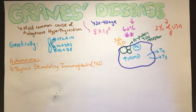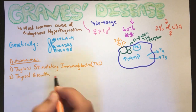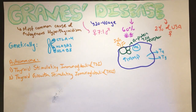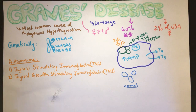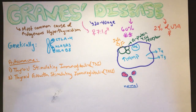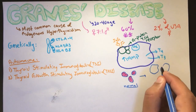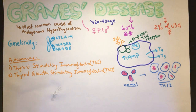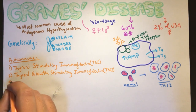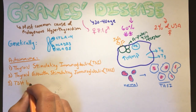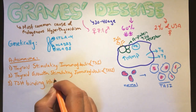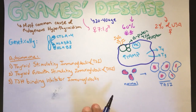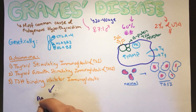Thyroid growth stimulating immunoglobulin causes proliferation of thyroid follicular epithelium, resulting in hypertrophy and hyperplasia with a scalloped edge shape. The third antibody is TSH binding inhibitor immunoglobulin, which works via two mechanisms: either mimicking TSH and increasing thyroid hormones, or inhibiting TSH receptors.